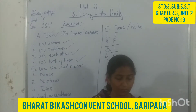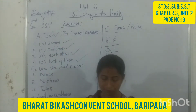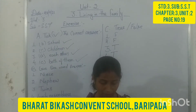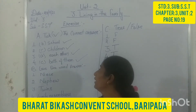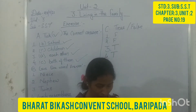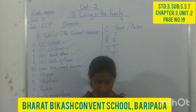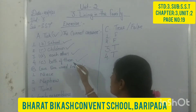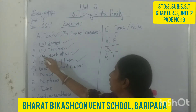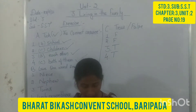Now we do the exercise. First question is: check the correct answer. The family is called the first school of us. You should take option B where 'school' is written. Question number 2: the closest blood relation is between the parents and their children. The nearest blood relation is parents with their children. The option is C, so you should tick on C.